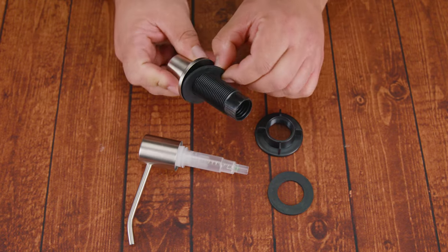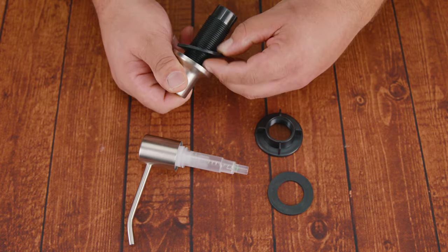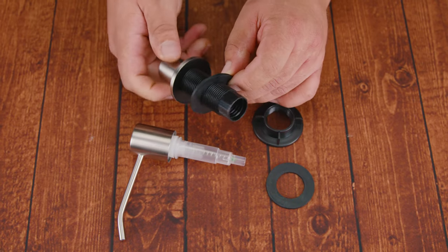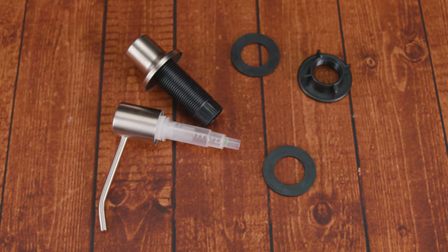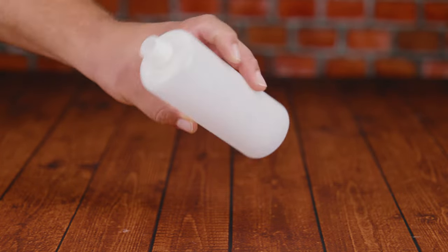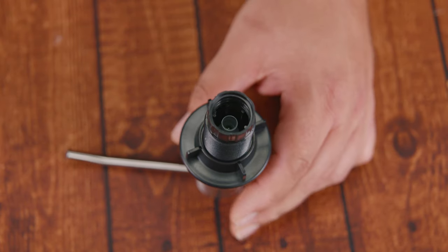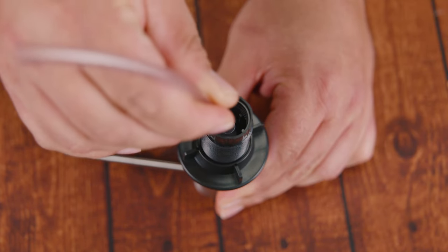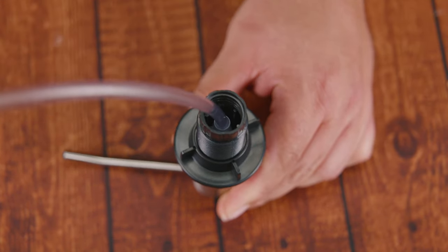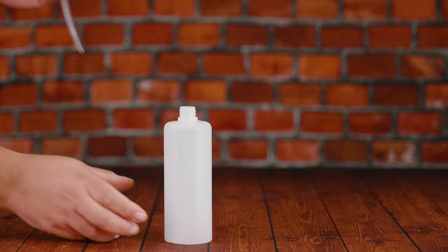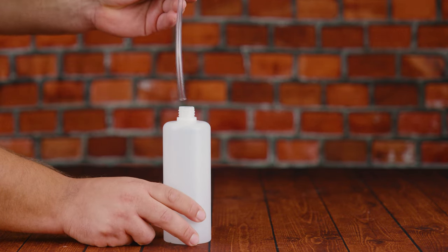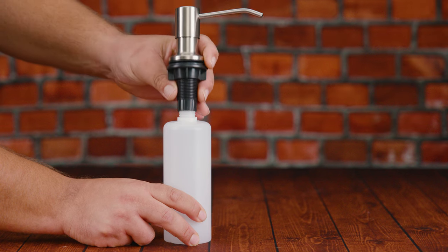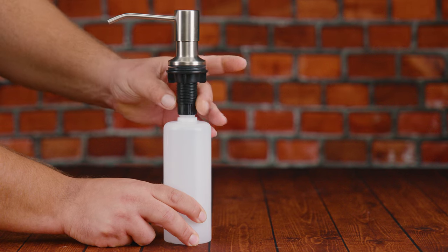We're gonna remove the tightening nut and then we're gonna find two washers, but we're gonna leave the first one in because this is the one that's gonna go on top of the sink. Next we have the plastic bottle container for the soap. Next we have the straw that's gonna make your pump reach the soap in the bottle and we want to make sure that we install that.